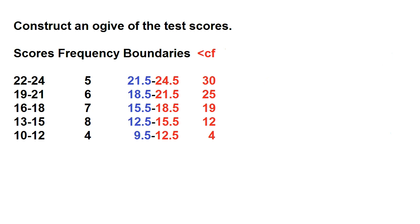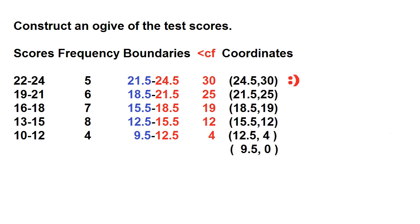Let's add another column for the coordinates of the less than ojive. How many students got scores less than 24.5? The answer is 30. So the coordinates are: (24.5, 30), (21.5, 25), (18.5, 19), (15.5, 12), (12.5, 4). We also include the lower boundary of the lowest class interval, which is 9.5. How many students got scores less than 9.5? The answer is 0.